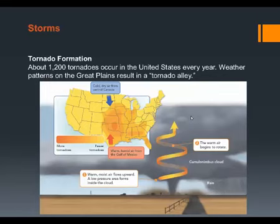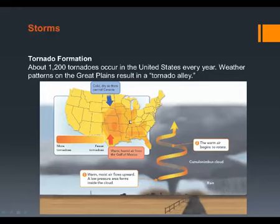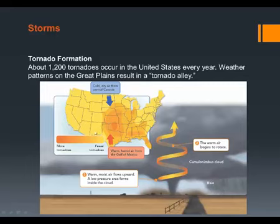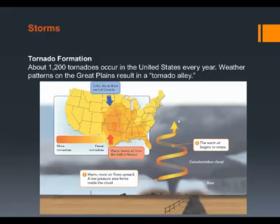About 1,200 tornadoes occur in the United States every year. The Great Plains through the central United States is known as Tornado Alley. Tornadoes are so predominant here because warm, moist air from the Gulf of Mexico moves up while cool, dry air from Canada sinks down. The Rocky Mountains, running north to south, cause these opposing air masses to collide rather than pass each other, producing lots of condensation and increased wind speeds.